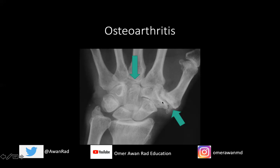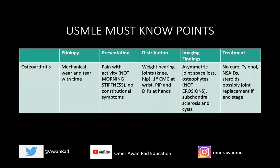A very nice example of what osteoarthritis would look like in the wrist. The second most commonly involved joint in the wrist would be the triscaphy — between the scaphoid, trapezium, and trapezoid. It's not that involved here, maybe a little bit of joint space loss, but the hallmark area where it's involved is the first CMC or first carpal metacarpal joint.